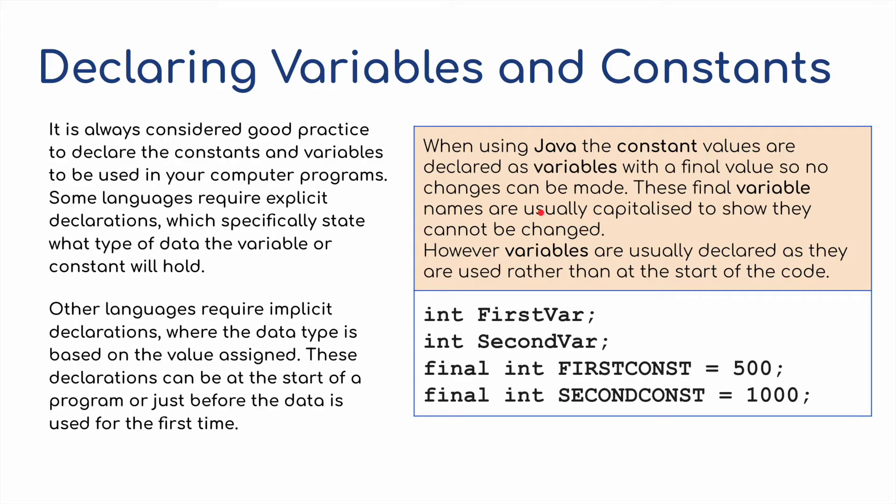In Java, it works in a slightly different way. When using Java, the constant values are declared as variables with a final value so no changes can be made. These final variable names are usually capitalized to show that they cannot be changed. However, variables are usually declared as they are used rather than at the start of the code. For example, int first var, int second var, or final int for the constants, and they've been assigned values.